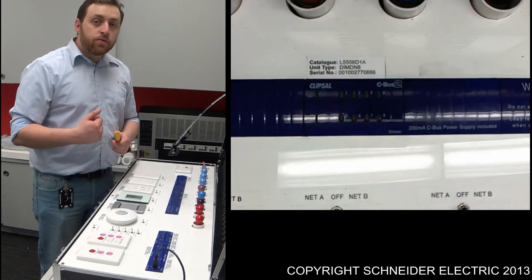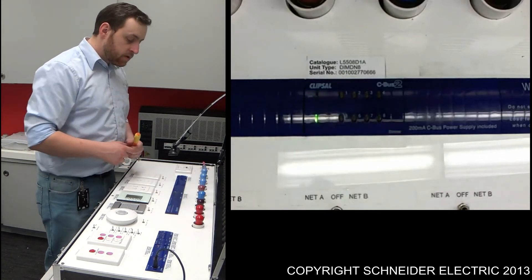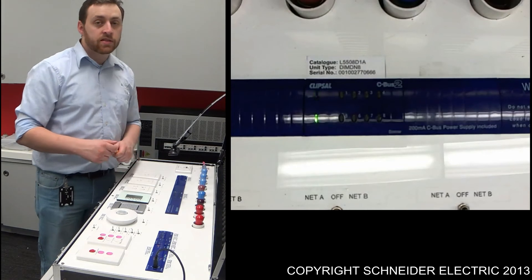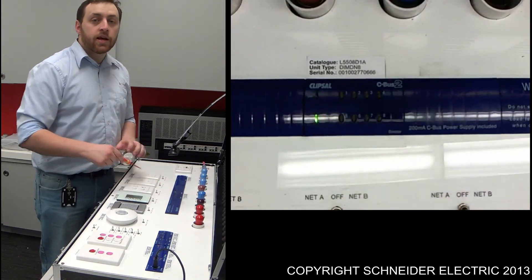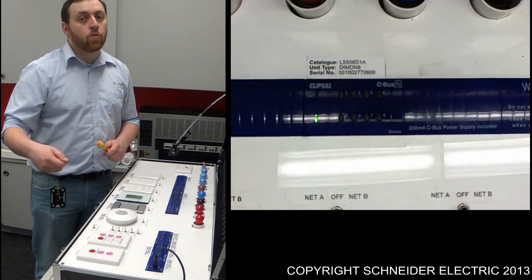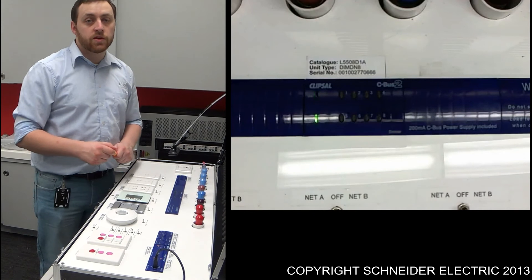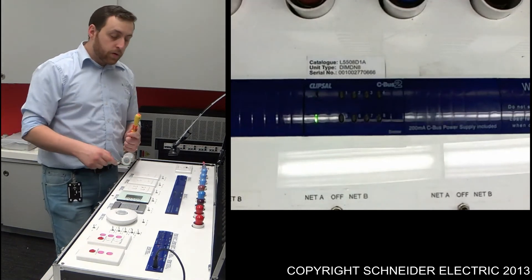To enable a software burden, all I need to do is double press one of the channel buttons. What you'll find is the C-Bus LED comes on. Now what's happened is this particular unit has now been re-addressed to 001. Also, its software burden has been enabled.